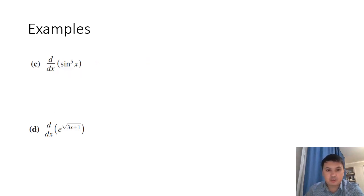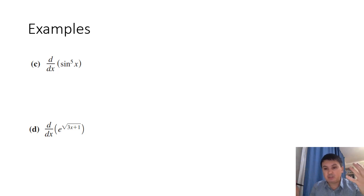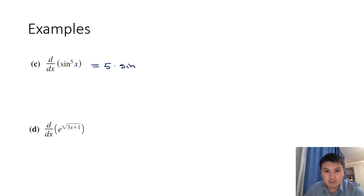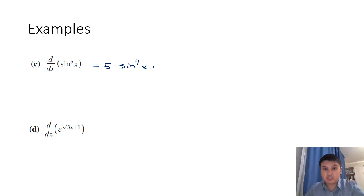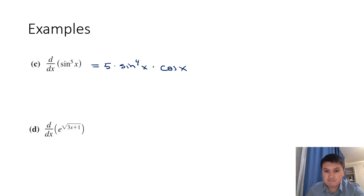Let's take the derivative of sin⁵(x). We evaluate sin(x) and raise it to the power 5. Using the power rule with chain rule: 5 · sin⁴(x) multiplied by the derivative of the inside, which is cos(x).